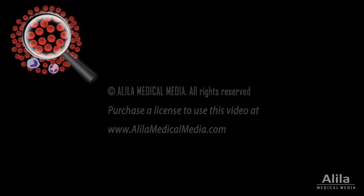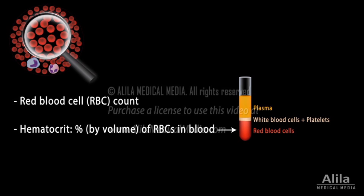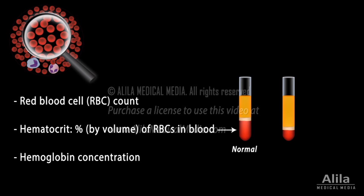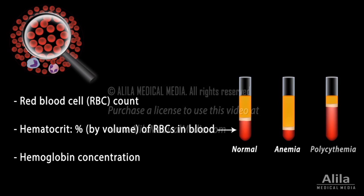Common measurements include red blood cell count, hematocrit, and hemoglobin concentration. An imbalance between the rate of red cell production and death can result in their deficiency, known as anemia, or excess, known as polycythemia.